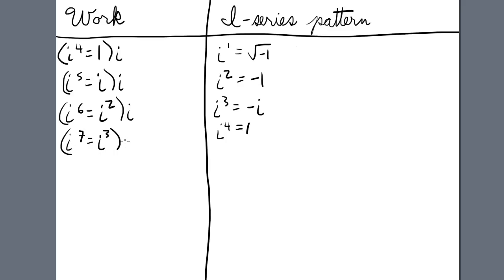Multiply again both sides by i, we have i to the eighth equals i to the fourth, which equals 1.